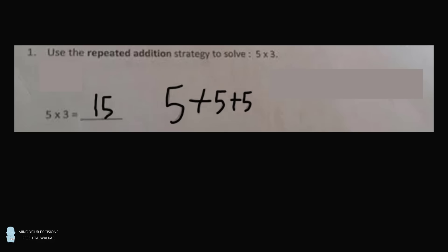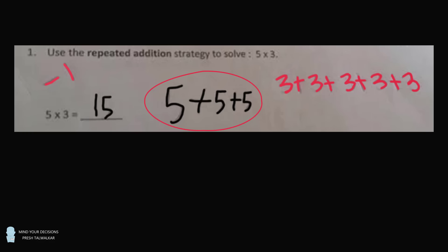Hey, this is Presh Talwalkar. Here's a question that went viral about 9 years ago. A student needs to solve 5 times 3. The student gives the answer of 15 and justifies it as 5 plus 5 plus 5. 15 is the correct answer, so it would appear the student should get full marks. But instead, the teacher has focused on the working of 5 plus 5 plus 5. The teacher says this is not correct. The correct answer is 3 plus 3 plus 3 plus 3 plus 3, and the student has one mark deducted. In other words, 5 times 3 equals 5 plus 5 plus 5 is wrong.